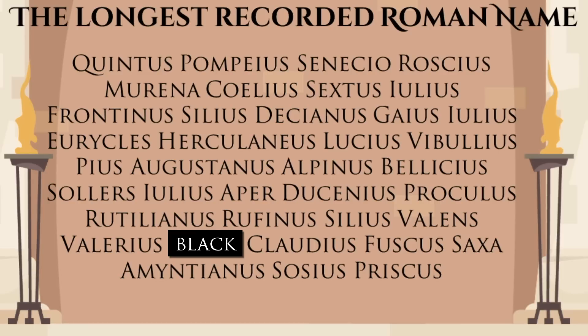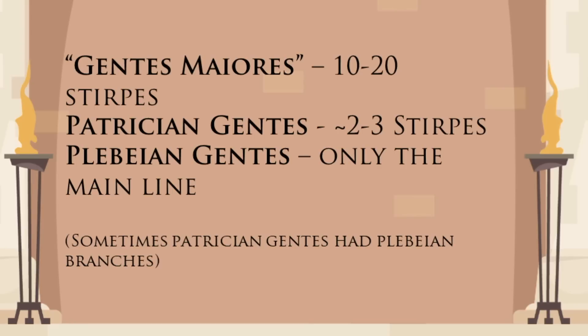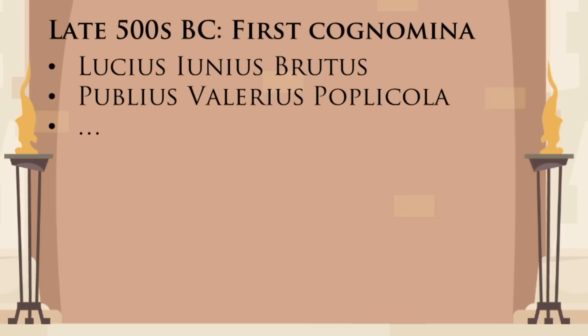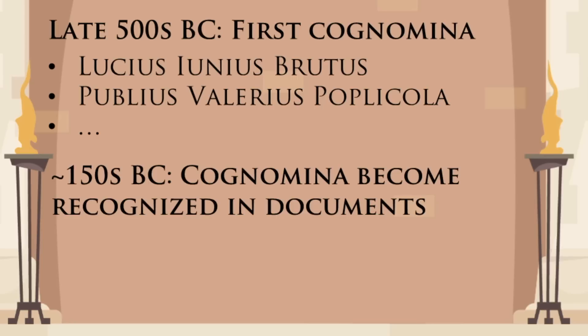These huge names may leave you with the impression that every Roman citizen had at least three names — but this wasn't the case. Only the most ancient, influential and powerful families, or Gentes Maiores, had a lot of branches. Some other families had a couple of branches, while most of them didn't have any cognomina at all, so the majority of Roman citizens only had two names. The two most famous Romans without a cognomen are probably Gaius Marius and Marcus Antonius. Cognomina first started appearing in the late kingdom and early republic era, but did not become common until much later, and weren't recognized in official documents until the second century BC.